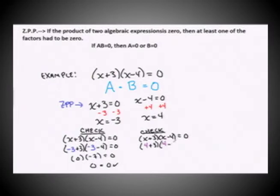And that gives me four plus three, giving seven. And four minus four, which is zero. And certainly seven times zero is zero, making positive four a solution as well.